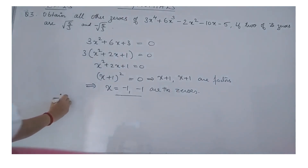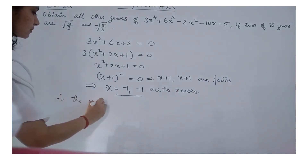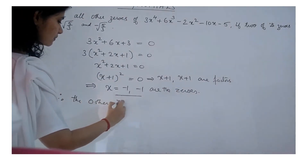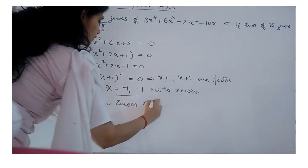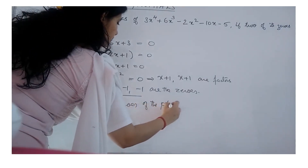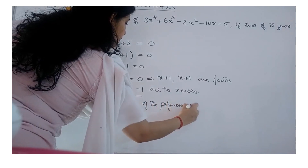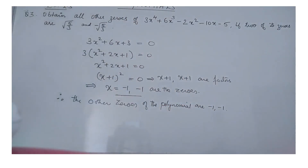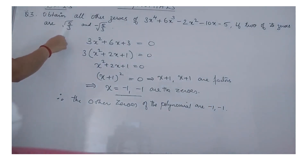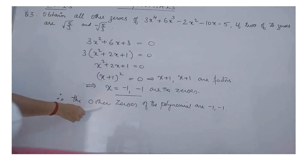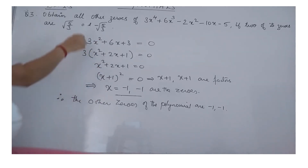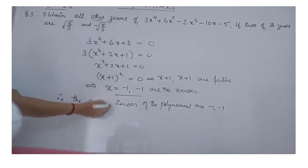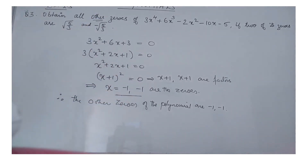Hence the other zeros of the polynomial are -1 and -1. If the question asks to find all the zeros, then you would also write √(5/3) and -√(5/3) together with these. Here they are asking to find all the other zeros, which is why we are writing only -1 and -1.